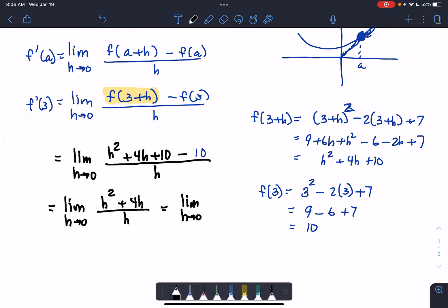So the limit as h approaches 0 of h plus 4. h squared over h is h, 4h over h is 4. And now we can directly substitute 0 for h, and we get 0 plus 4, which is 4.